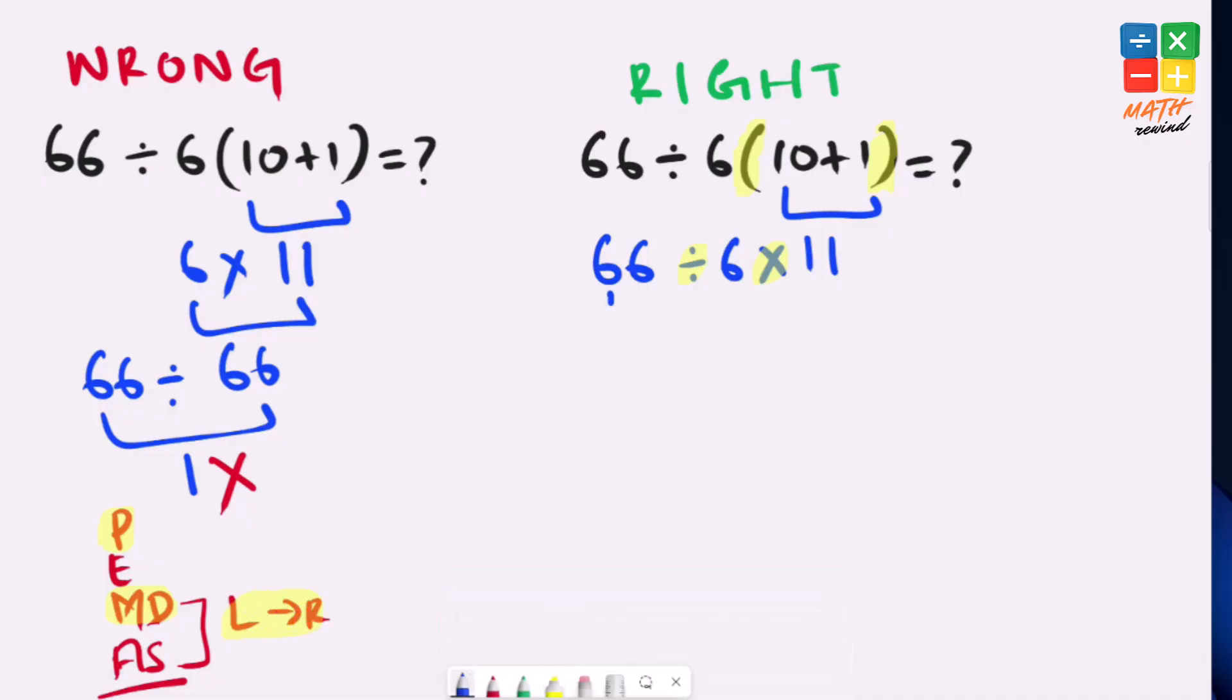So we'll solve the left side first. 66 divided by 6 gives us 11, and 11 times 11 gives us 121. This is the right answer to this problem.